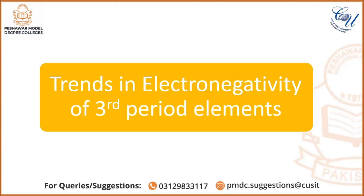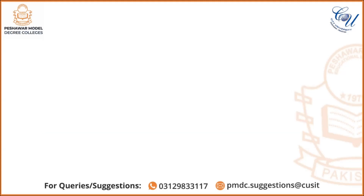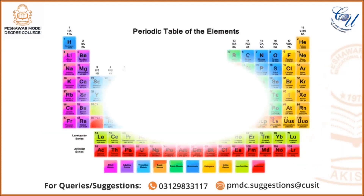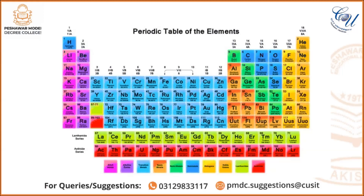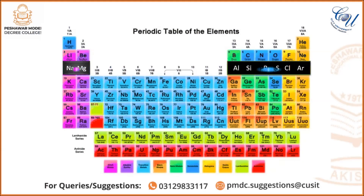Now we are going to discuss the trends in electronegativity of third period elements. The third period starts from sodium and ends at argon. The third period elements are: sodium, magnesium, aluminium, silicon, phosphorus, sulfur, chlorine, and argon.